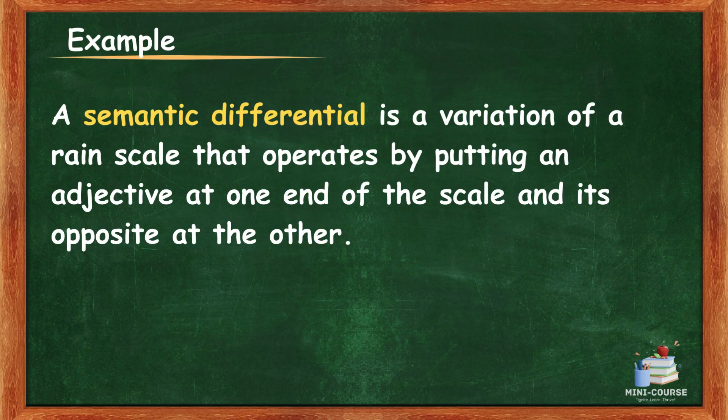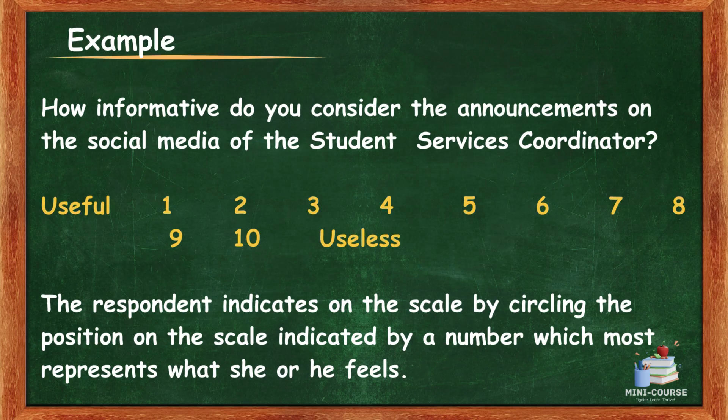A semantic differential is a variation of a rating scale that operates by putting an adjective at one end of the scale and its opposite at the other. For example: 'How informative do you consider announcements on the social media of the student services coordinator?' Useful 1-2-3-4-5-6-7-8-9-10 Useless. The respondent indicates on the scale by circling the number which most represents what he or she feels.